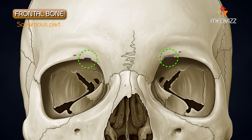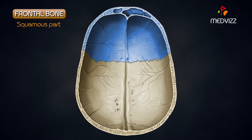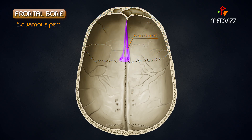The supraorbital notch is a small groove situated on the superior and medial margin of the orbit. The internal surface is deeply concave and presents a median bony ridge called the frontal crest, which is continuous above with the sagittal sulcus. The foramen cecum lies at the lower end of the crest.